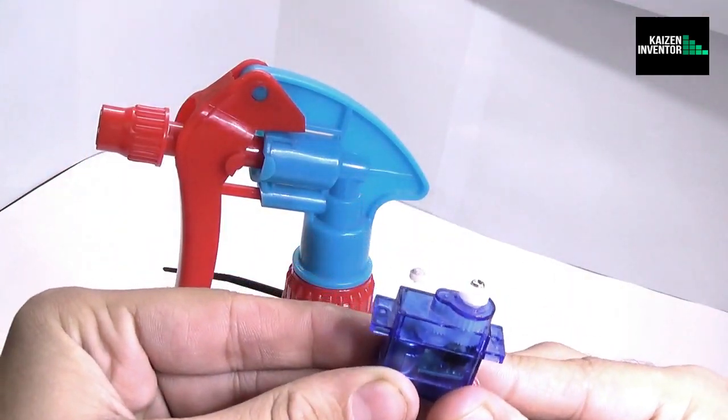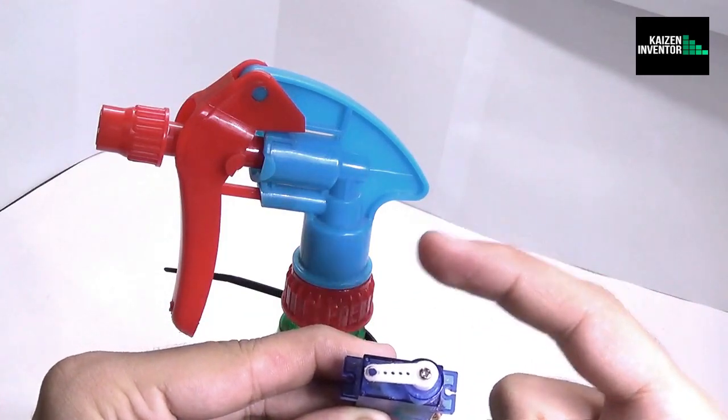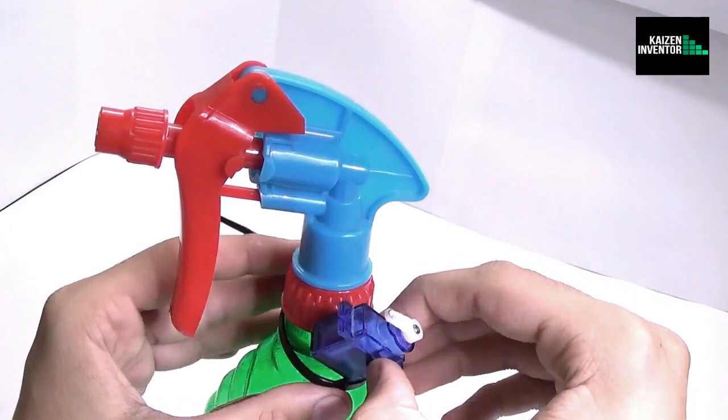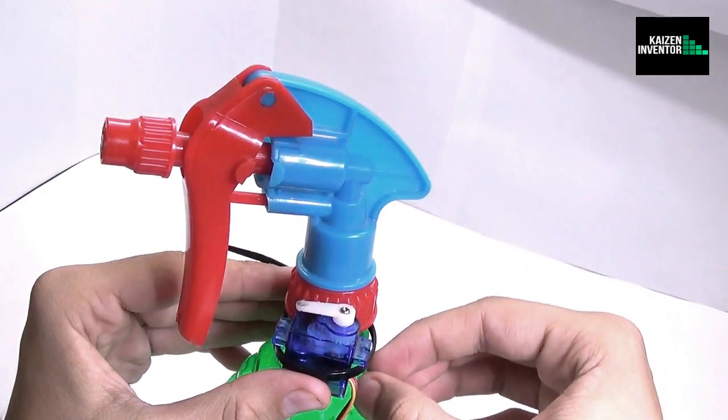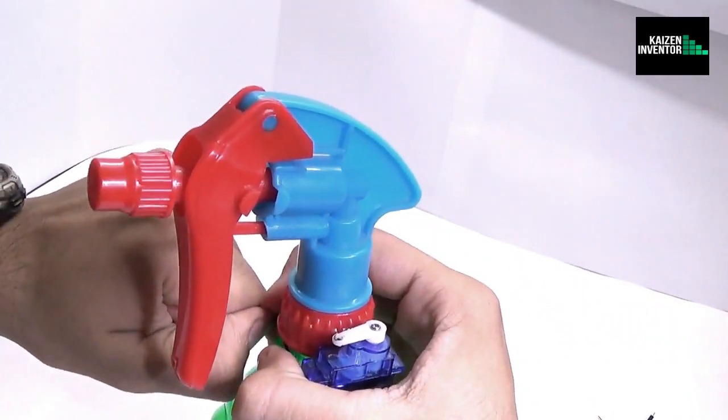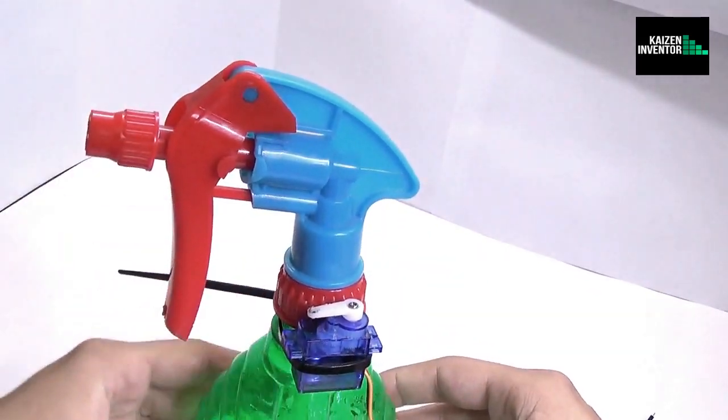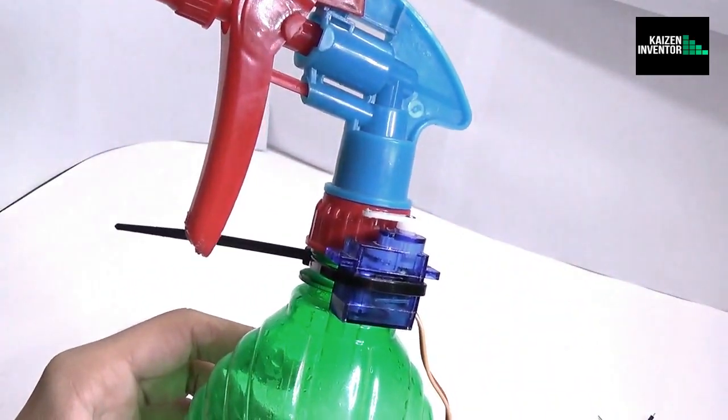Now take the 9 gram servo and make sure that the arm of the servo is in line with the sprayer's head. Now you want to place the servo on the collar of the bottle in such a way that it rests on the bottle. Now you want to secure it tightly with a zip tie so that it doesn't fall off while spraying. Now let's move to the third step.